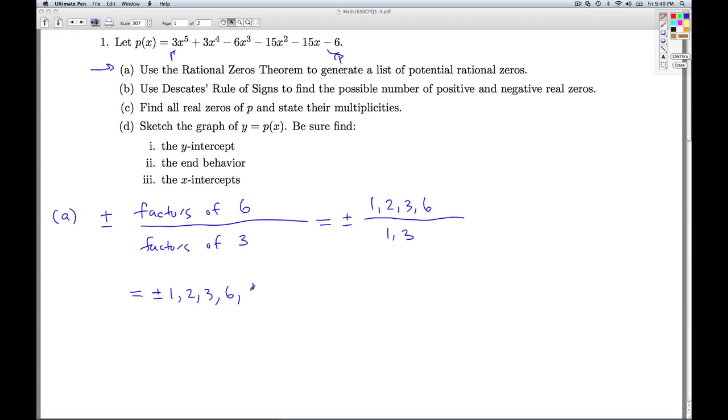1 over 3 is 1/3, 2 over 3 is 2/3, 3 over 3 is 1 which we already have, 6 over 3 is 2 which we already have. So this is our list of potential rational zeros.